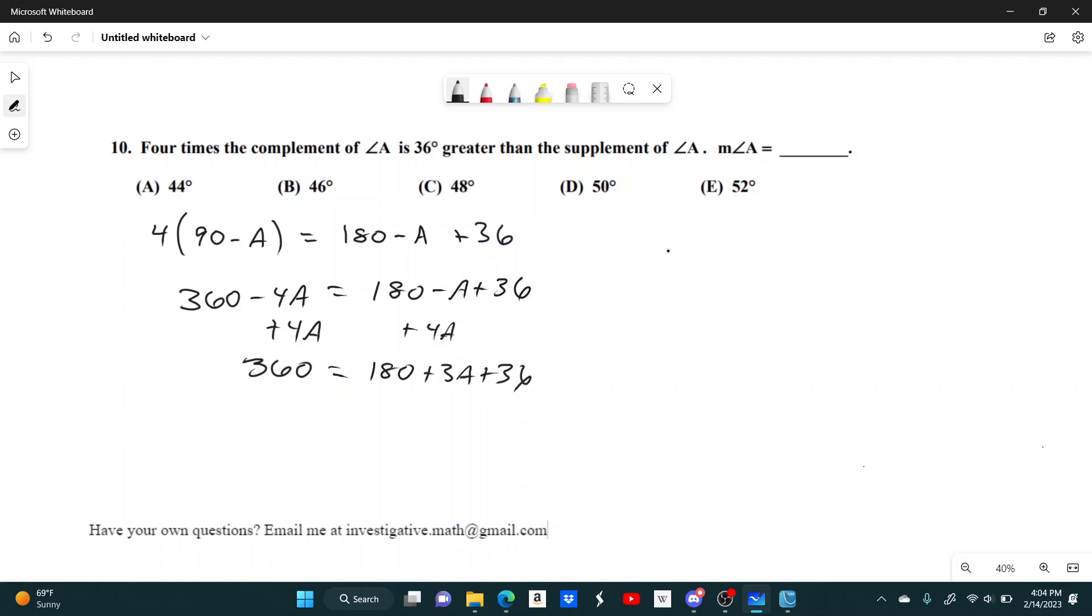Move the 180 to the left-hand side. 180 equals 3A plus 36. So subtract 36 from both sides. So 144 equals 3A divided by 3. So that means that A equals 48 degrees, and that's answer choice C.